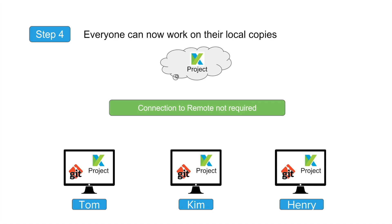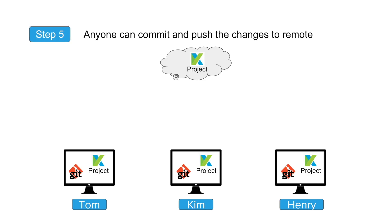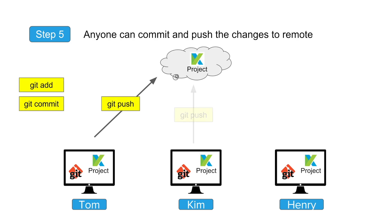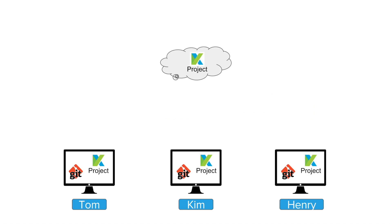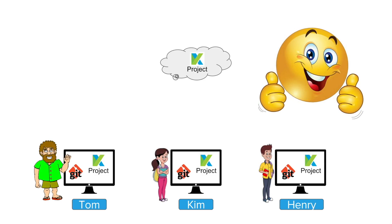Step five: after they have finished their changes, they can push those changes back to the remote repository. They will do a Git add, Git commit, and finally a Git push to add the changes to the remote repository. Whenever they want the latest changes, they can do a Git pull and get the updates on their local system — whatever changes others have made will appear locally. This is how Tom, Kim, and Henry do version controlling and resolve all their problems.